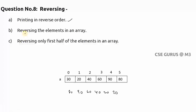The third question is reversing only the first half. If I divide the array into two parts, I want to reverse only the first three elements. So the result should be 40, 20, 30 for the first half, and 60, 90, 80 for the second half remaining as-is. These are the three questions we will cover with explanation.